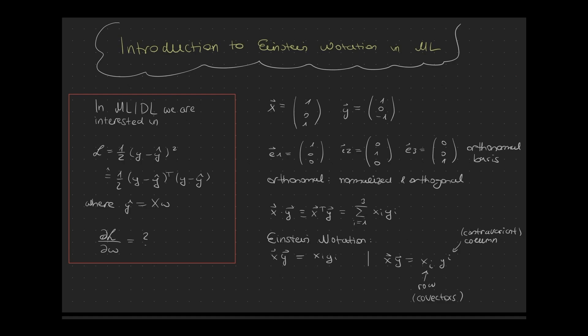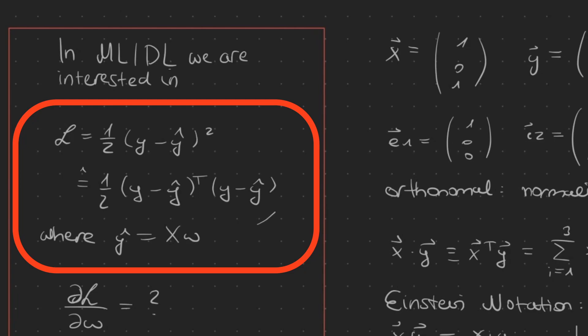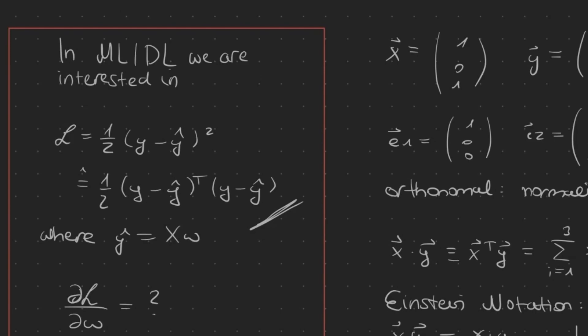A very commonly used objective function, especially in regression problems, is the mean squared error function defined here, where y-hat is the model prediction. y-hat is in this case x times w, which is used in polynomial regression problems.